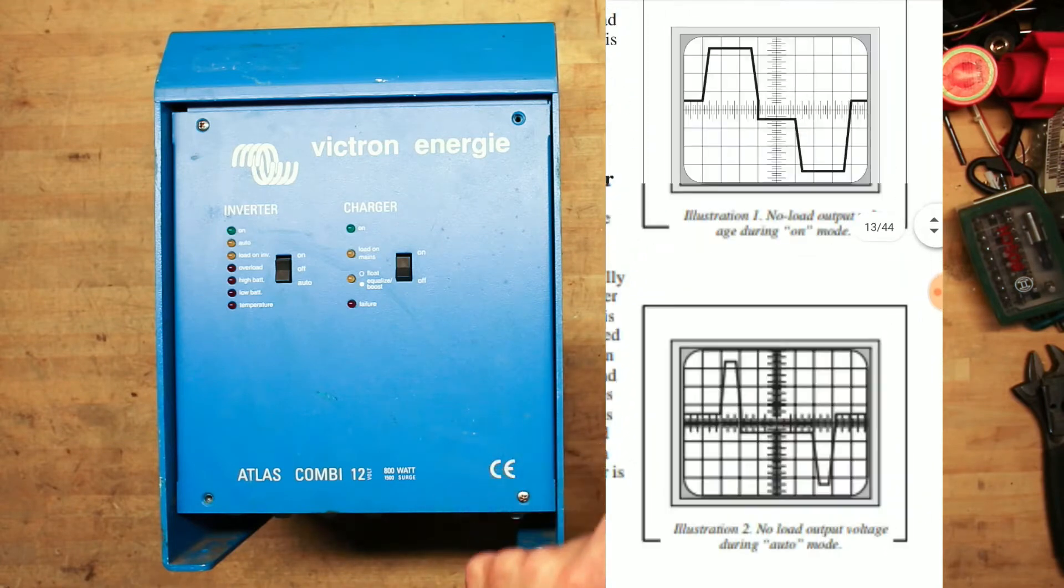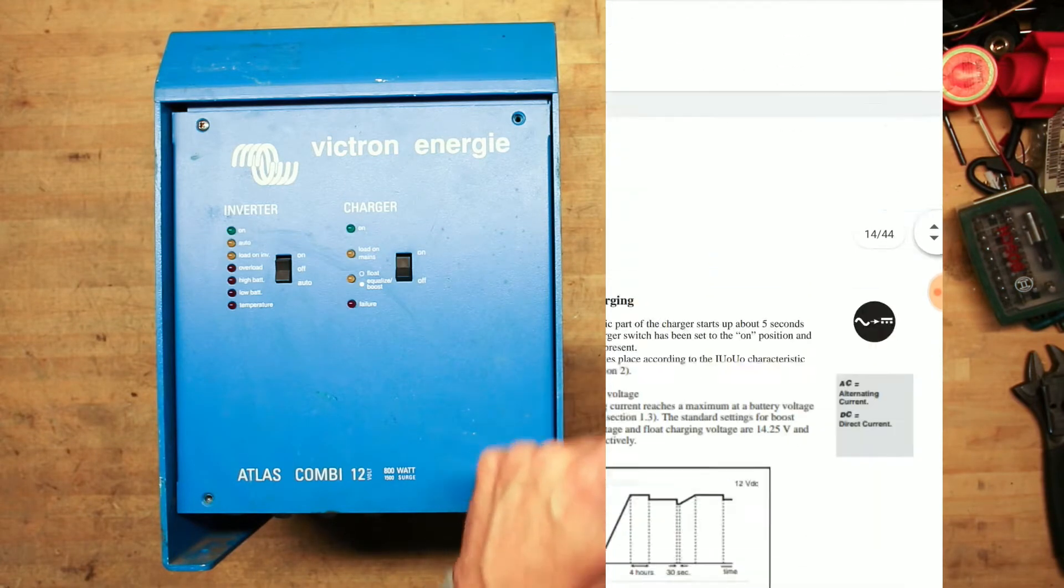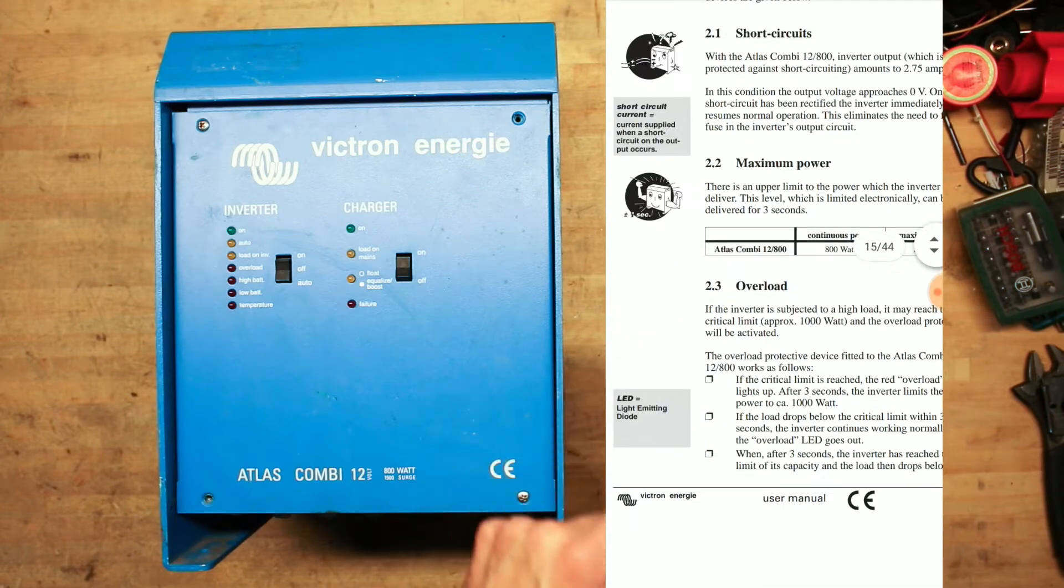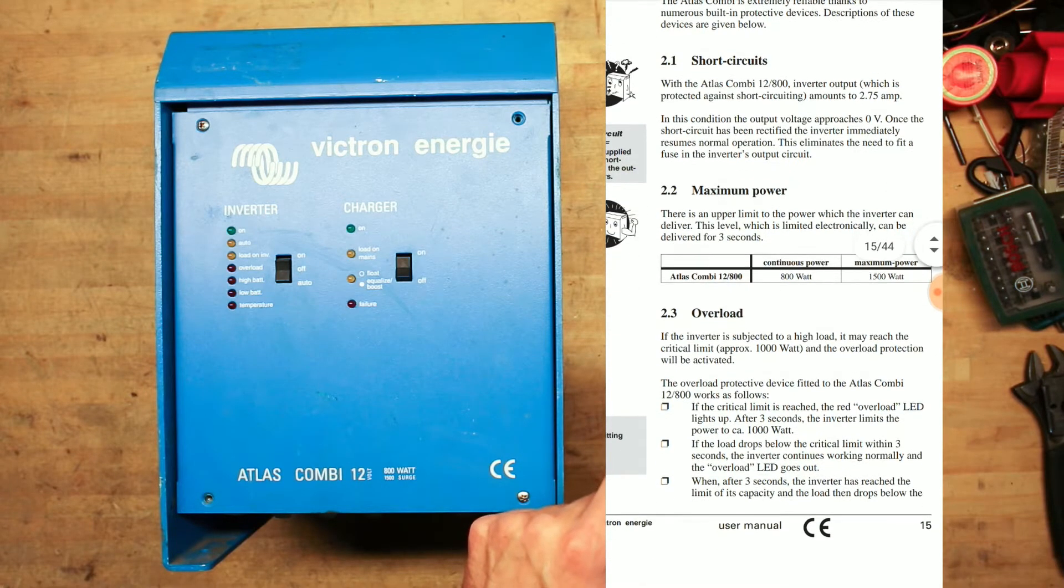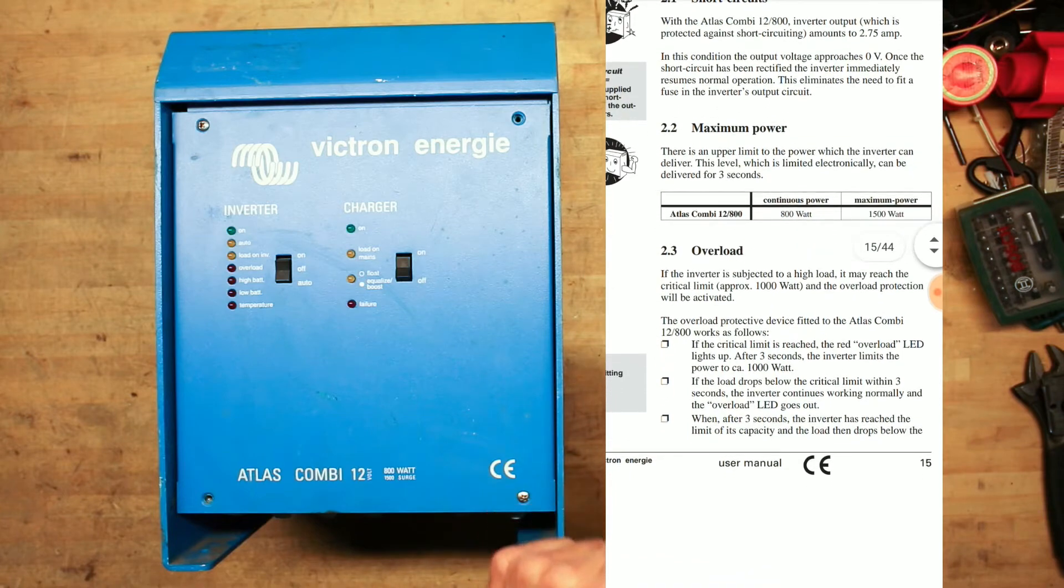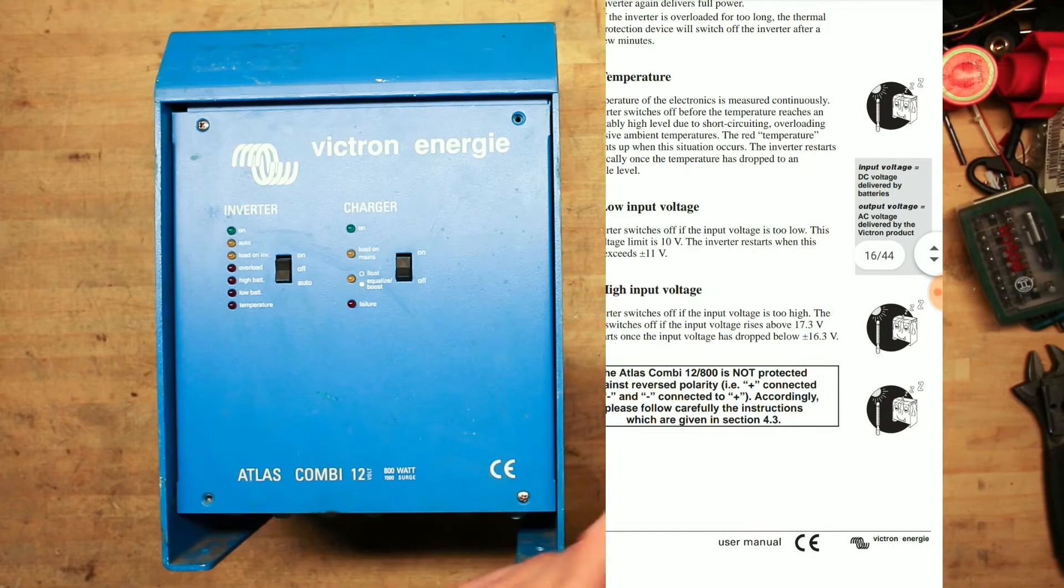Some output waveforms. Battery charging short circuits. It's protected against short circuits up to 2.75 amps. Then it will clamp the output voltage to 0 volts. That's nice. No fuses needed on the output.